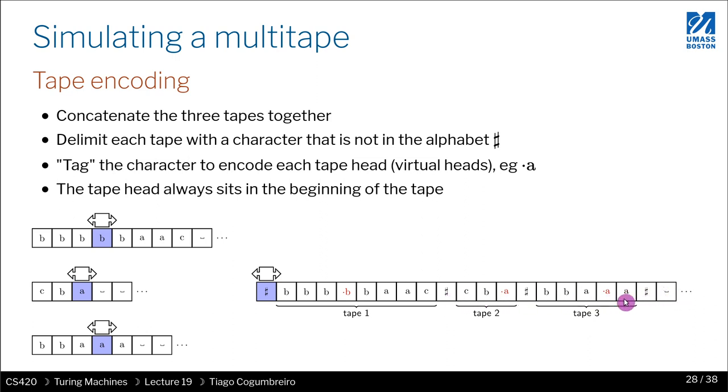By moving everything one position to the right, you now have room to accommodate, to accommodate the extension of tape one, and therefore simulate the fact that tape one is unbounded.